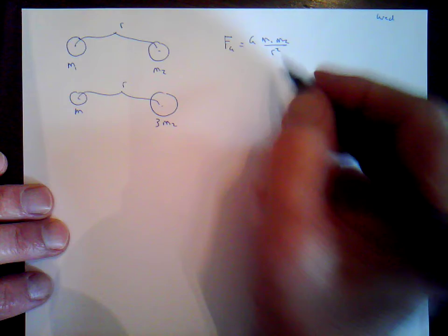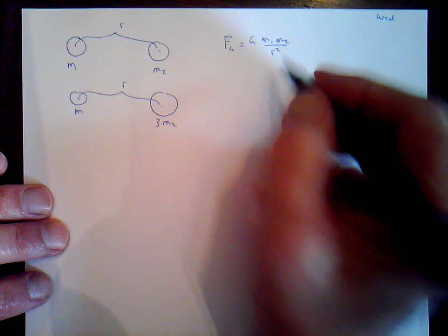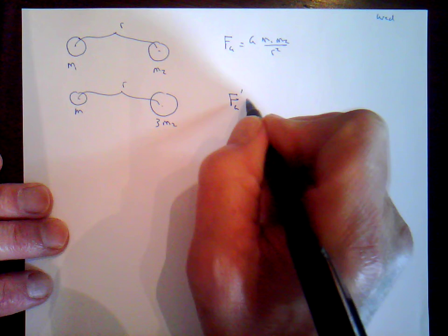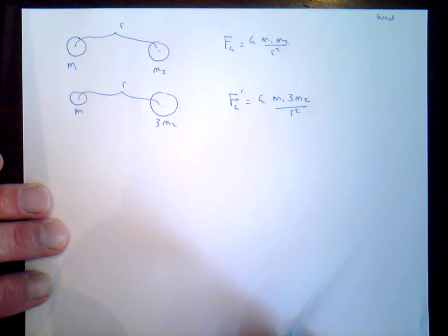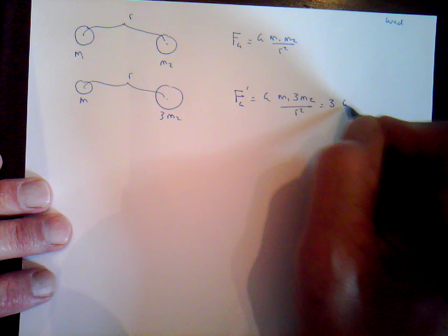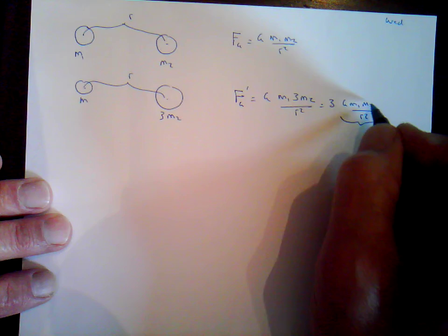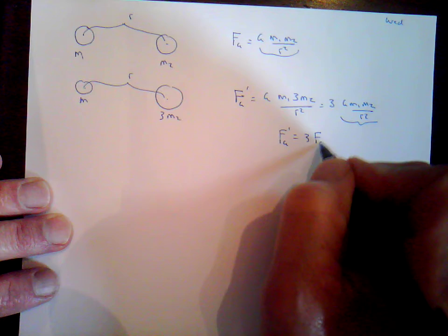Let's do this mathematically. This equation gives us a new force, fg prime, equal to g times m1 times 3m2 over r squared. I'm going to take the three out and put it in front: three times g times m1 times m2 over r squared. This quantity, g m1 m2 over r squared, is the original force of gravity. So fg prime is equal to three times the original force of gravity — the new force is three times the original.